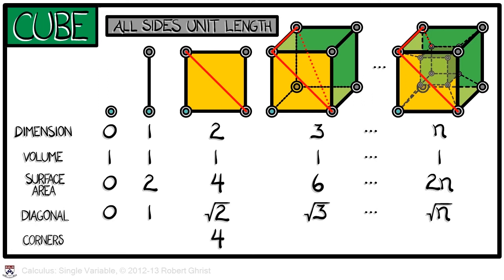Lastly, if we count the number of corners in an n-dimensional cube, we see for a square there's 4. For a cube there is 8. And in general, it's not hard to show that there are 2 to the n corners.